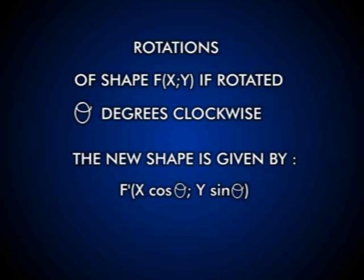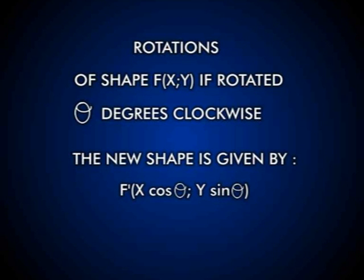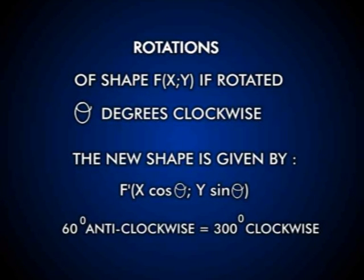Thankfully there is. The standard formula reads as follows: for shape F given by (x, y), if we rotate it by theta degrees, the new x is given by x·cos(θ) minus y·sin(θ). The new y coordinate is given by y·cos(θ) plus x·sin(θ). Remember it is always the clockwise angle — so if we rotate anti-clockwise by 60 degrees, it's as if we've rotated clockwise by 300 degrees.